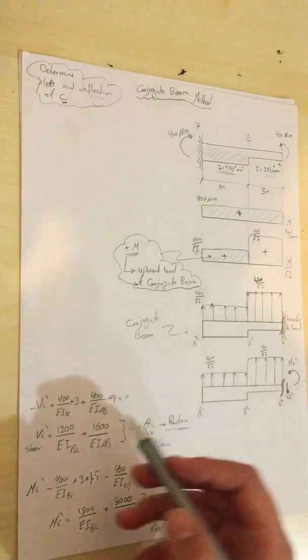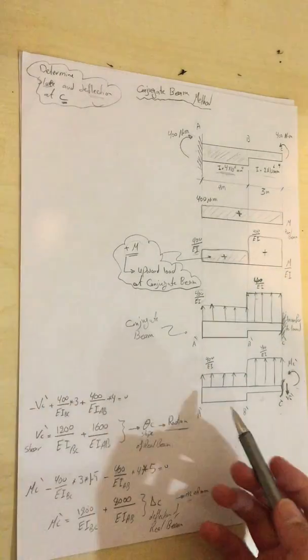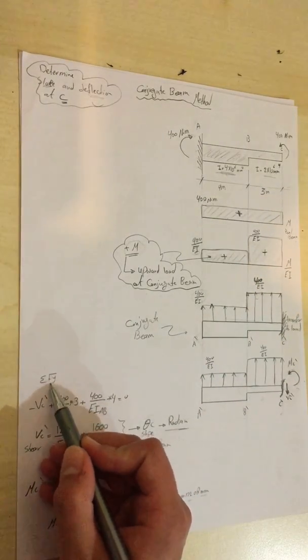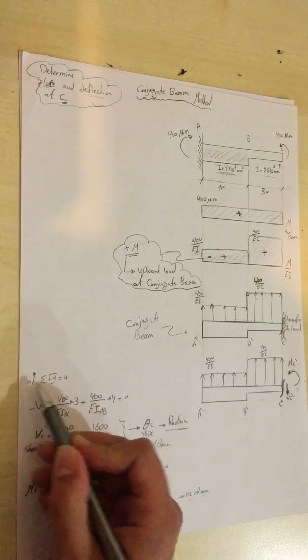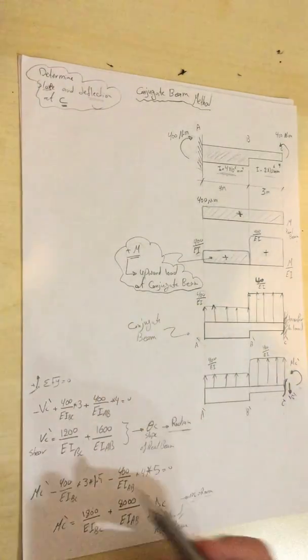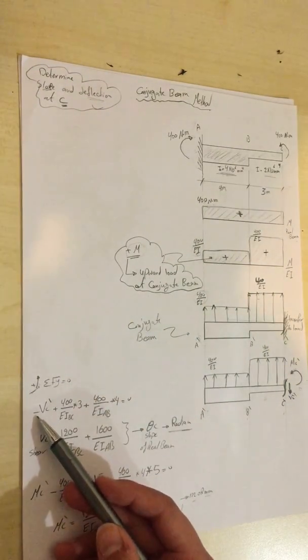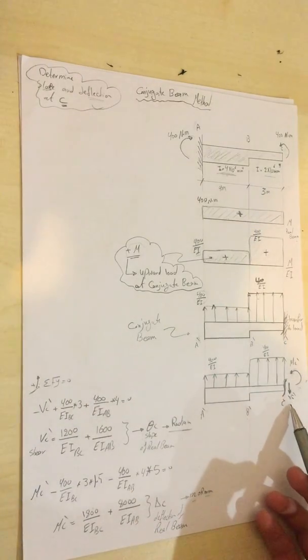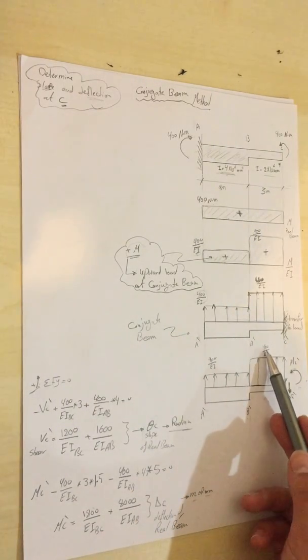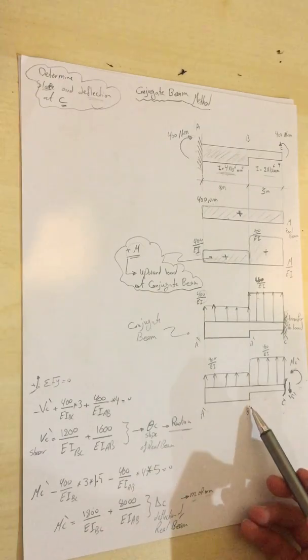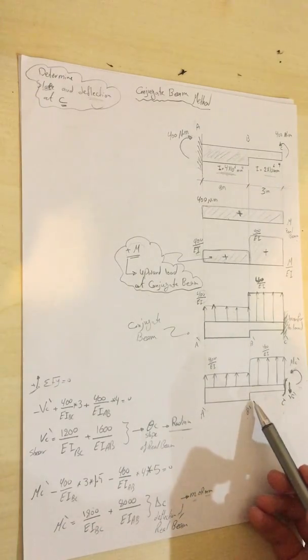Here I have summation Fy equals zero. Of course upward is positive, it's just an assumption. We have minus Vc dash plus 400 over EI of segment BC times 3, because this is times the length.